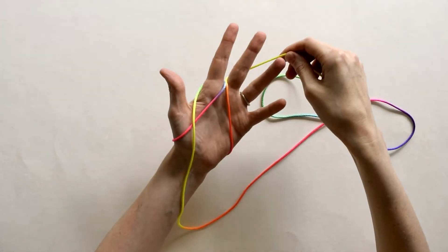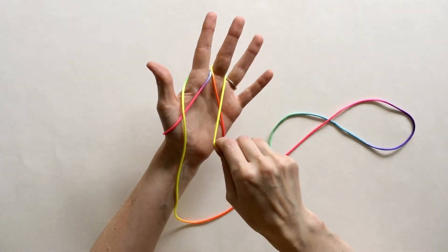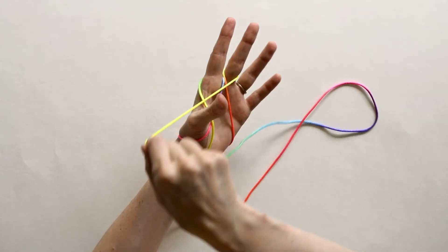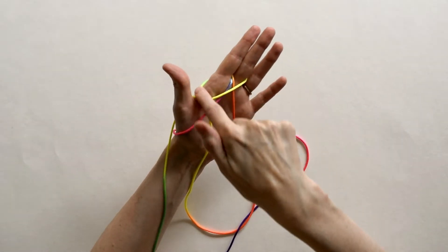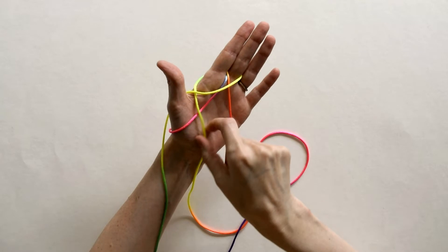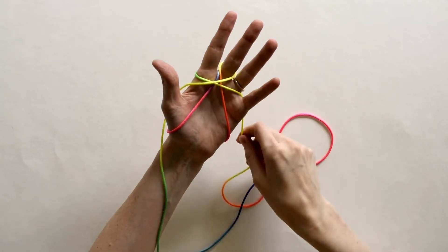Then your string closest to your middle, wrap it around to the front of your middle. Then take that same string and put it behind your thumb. Now the string coming from the left of your index finger, take that string and put it behind your pinky.